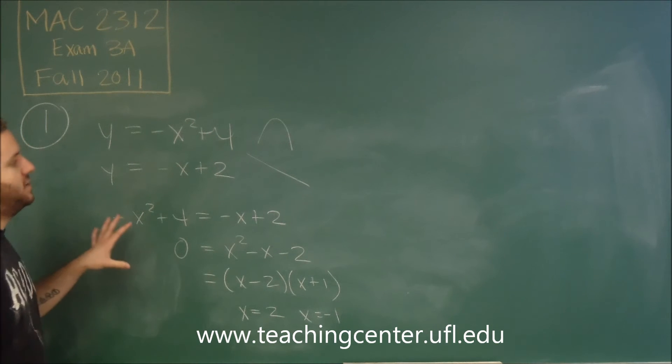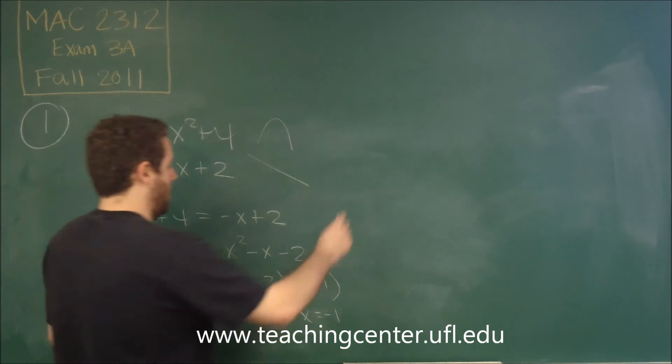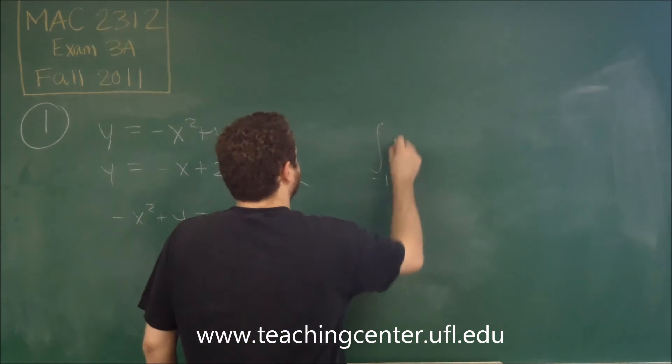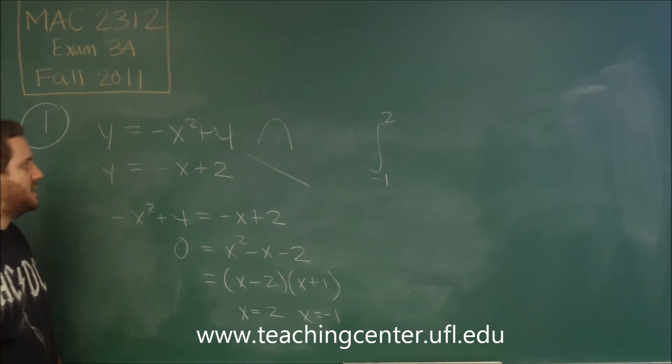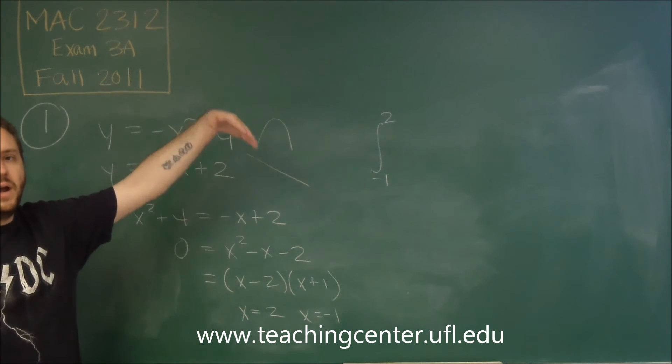So we know then that if we want to find the total area enclosed by this, we're going to be integrating from negative one to two. And like I said before, since the shapes of the graph are this way, we know that the parabola is going to be the higher graph.